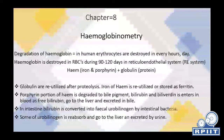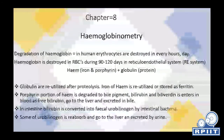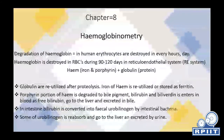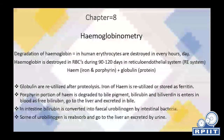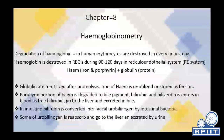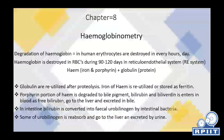Hemoglobin breaks into iron and porphyrin. Globin is a type of protein, which can be reutilized, along with the iron. The porphyrin portion is degraded to the bile pigment bilirubin, and bilirubin enters the blood as free bilirubin, then goes to the liver and is excreted in bile.